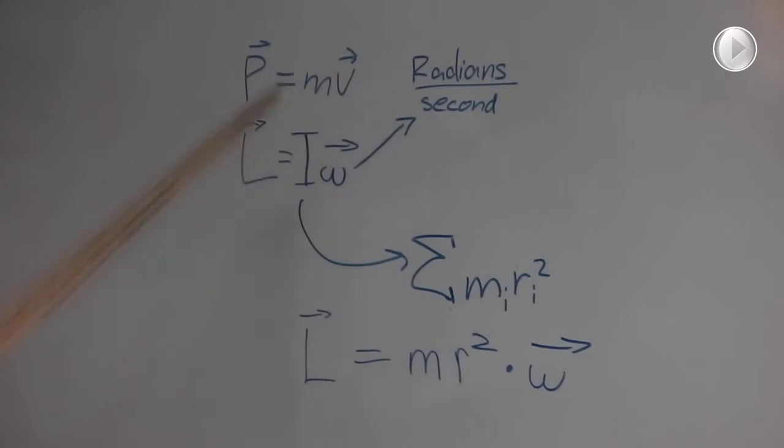Angular velocity is the radians per second that the object travels. Angular mass is found by the summation of mass times its radius squared. And because all the mass is in one spot in a tetherball, we don't need a summation. Giving us angular momentum is mass times radius squared times angular velocity.